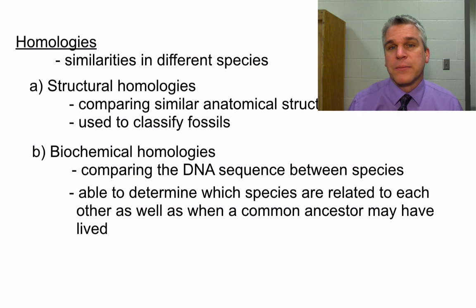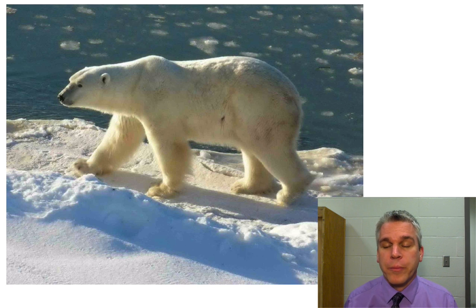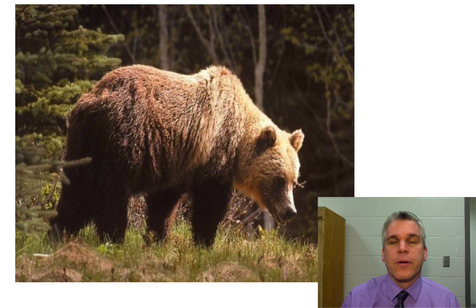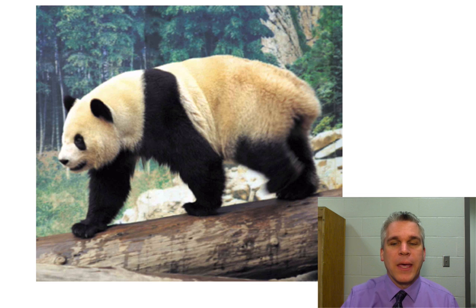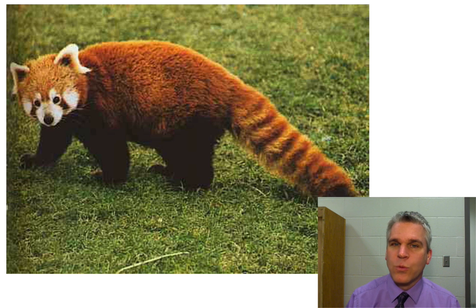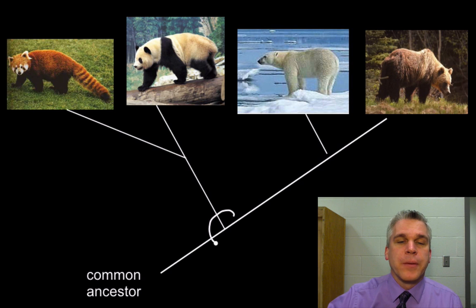Let's take a look at an example of how cladograms have changed because of these homologies. Here we see a polar bear — polar bears, based on their DNA, evolved from the grizzly bear. Another type of bear is the giant panda bear. There is also the red panda. When using structural homologies to classify these, the cladogram would have looked like all these bears sharing a common ancestor, with the polar bear and grizzly bear being a very recent offshoot of one another, and the two types of pandas sharing a common ancestor.